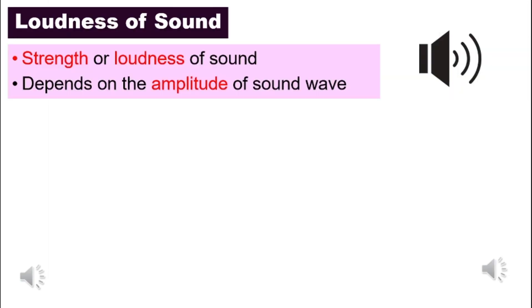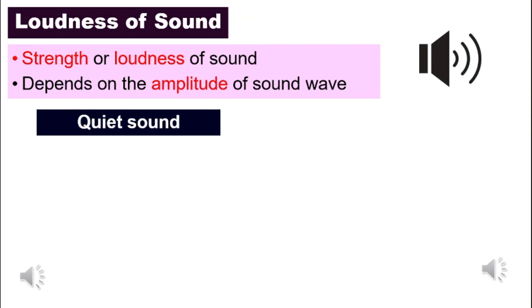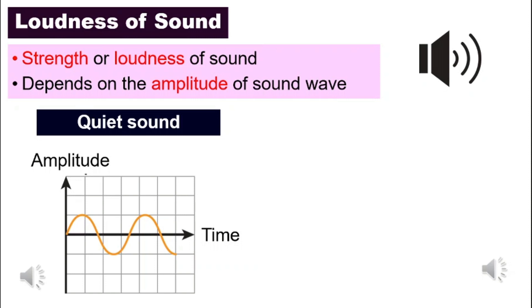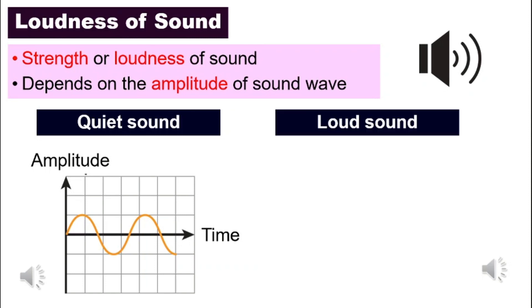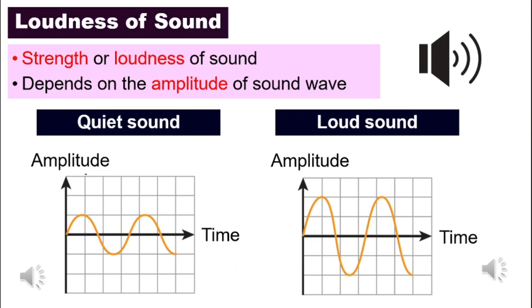The loudness of sound has to do with the strength or loudness of sound. It is like when you adjust the volume on your TV — if it is too loud you adjust it so it is softer, or if it is too soft you adjust it to a higher volume. That is called the loudness of sound. Loudness of sound depends on the amplitude of the sound wave. Remember: loudness depends on amplitude. This is very important. A quiet sound has a lower amplitude on the graph, whereas a loud sound will have a higher amplitude.